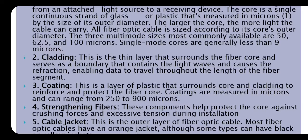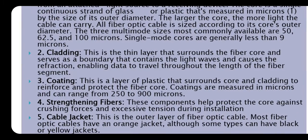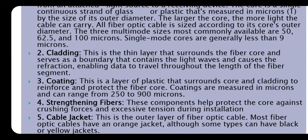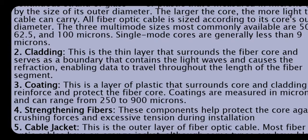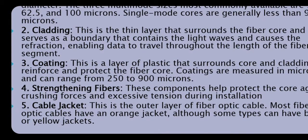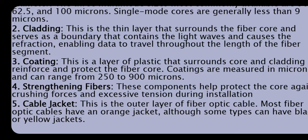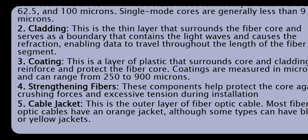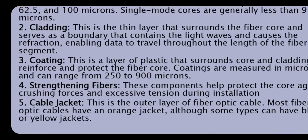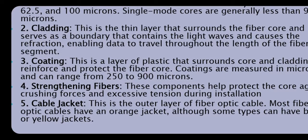Cladding: this is the thin layer that surrounds the fiber core and serves as a boundary that contains the light waves and causes refraction. The light which passes through the core is refracted in the cladding, enabling data to travel throughout the length of the fiber segment. Coating: this is a layer of plastic that surrounds the core and cladding, reinforcing and protecting the fiber core. Coatings are measured in microns and can range from 250 to 900 microns.